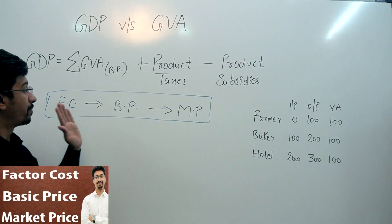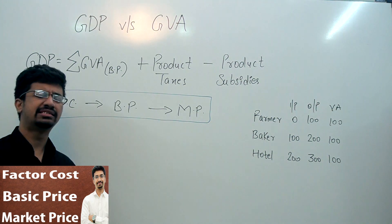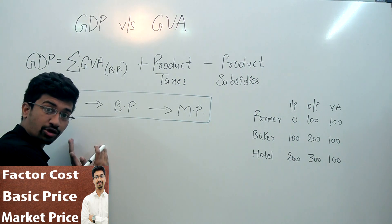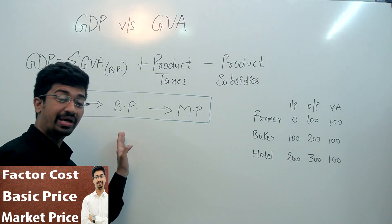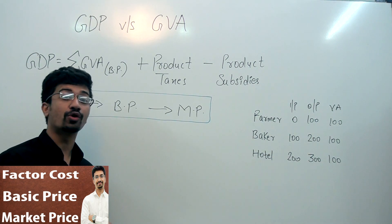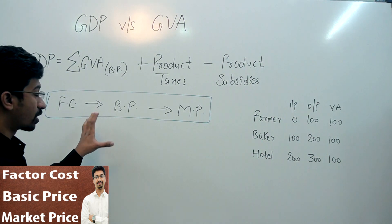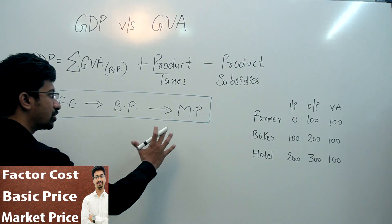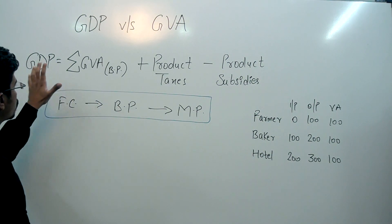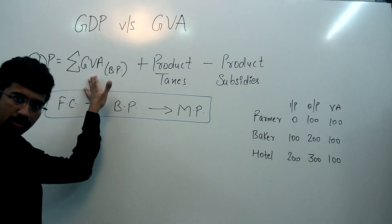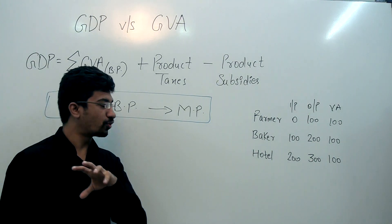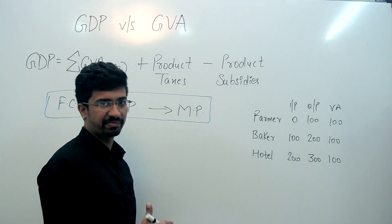Just for a revision — about factor cost, basic price, and market price. हम जानते हैं कि factor cost से हम basic price पे कैसे आये थे — production taxes के through, और basic price से market price पे — product taxes और product subsidies के through.